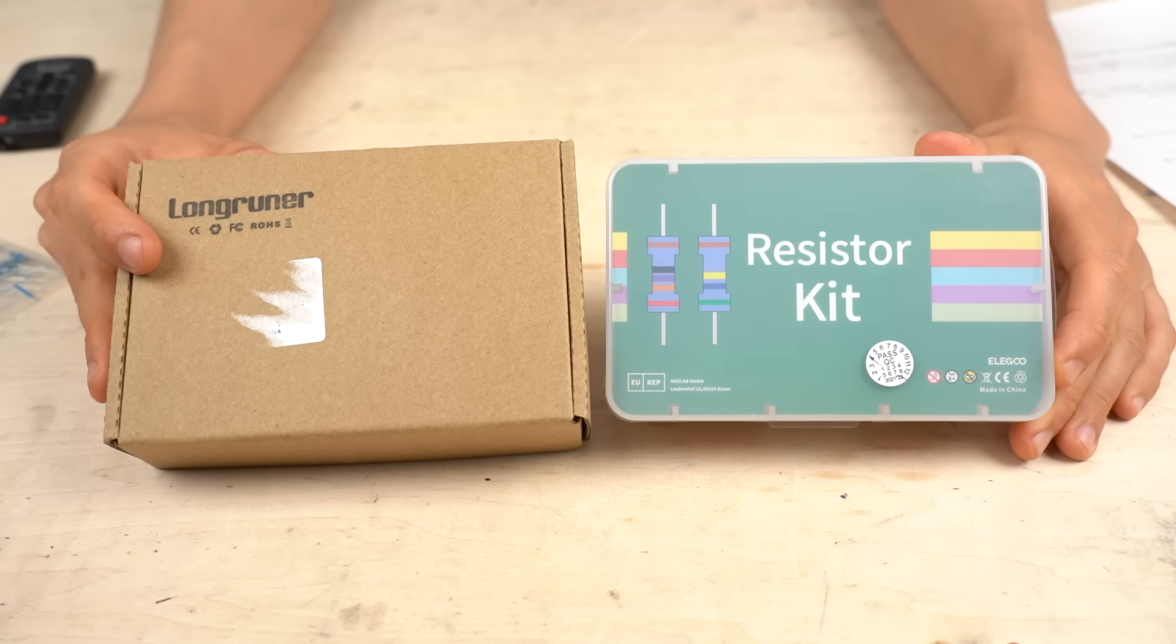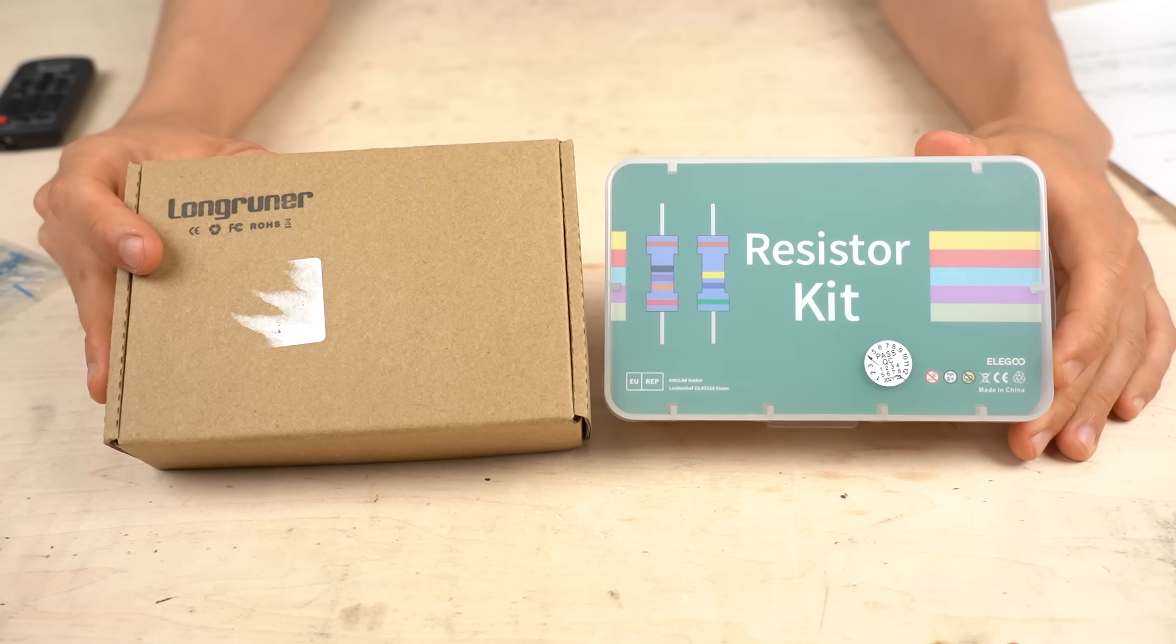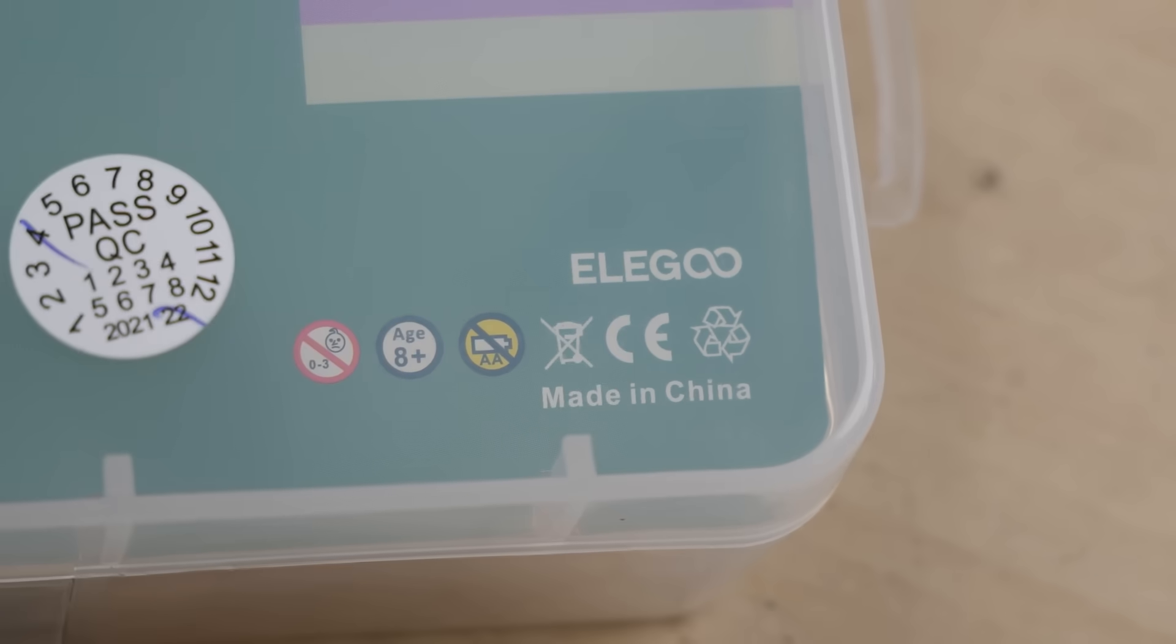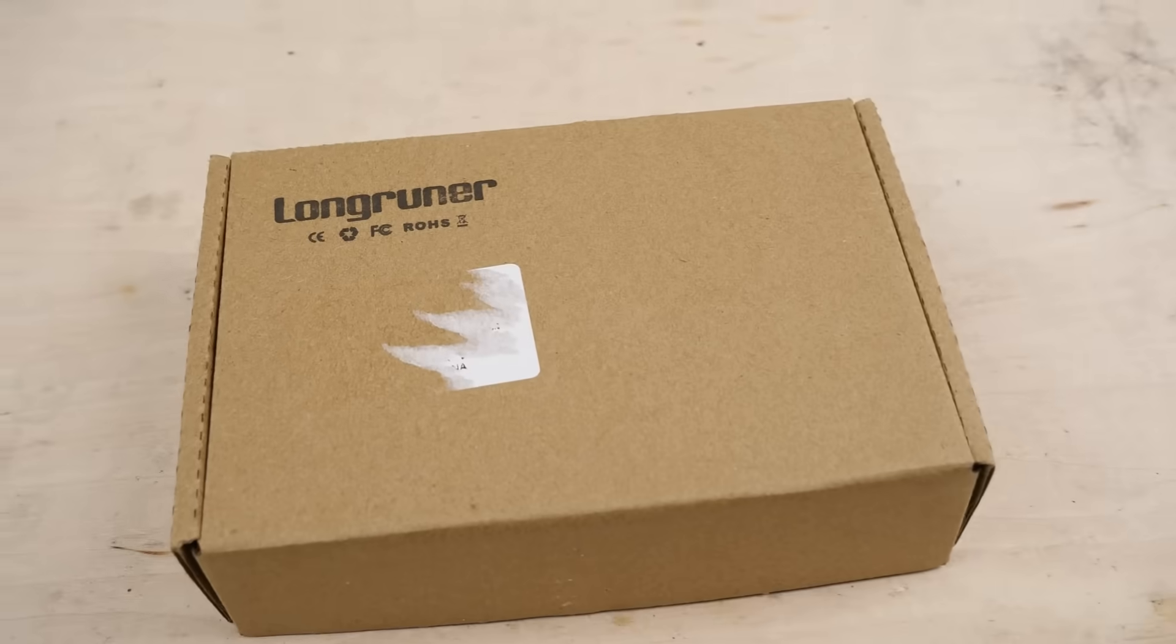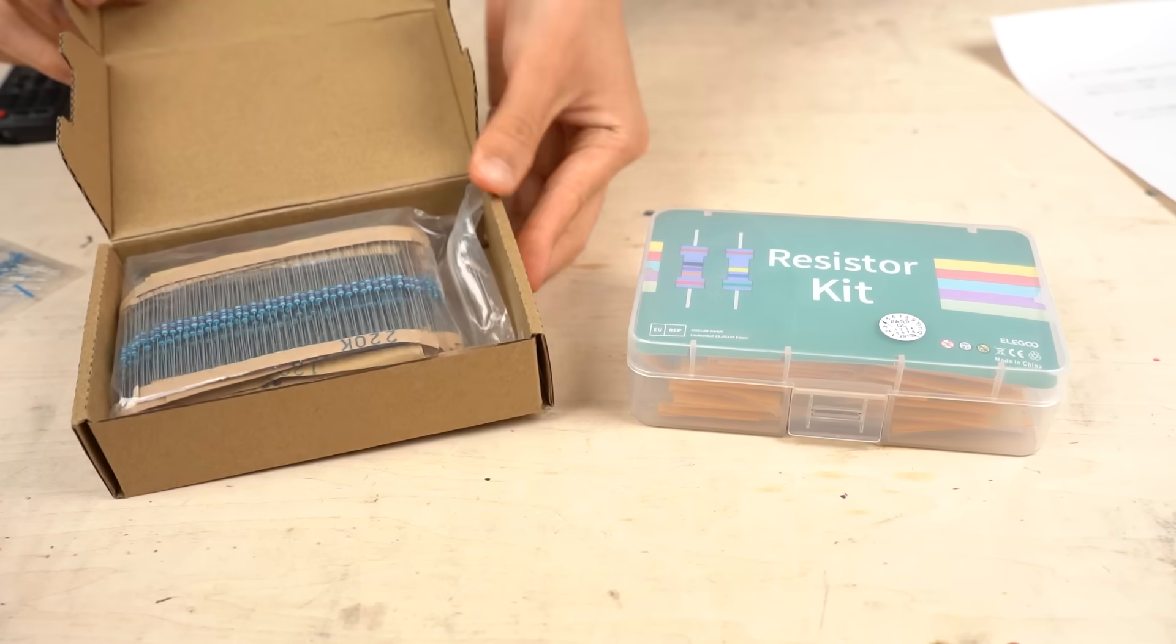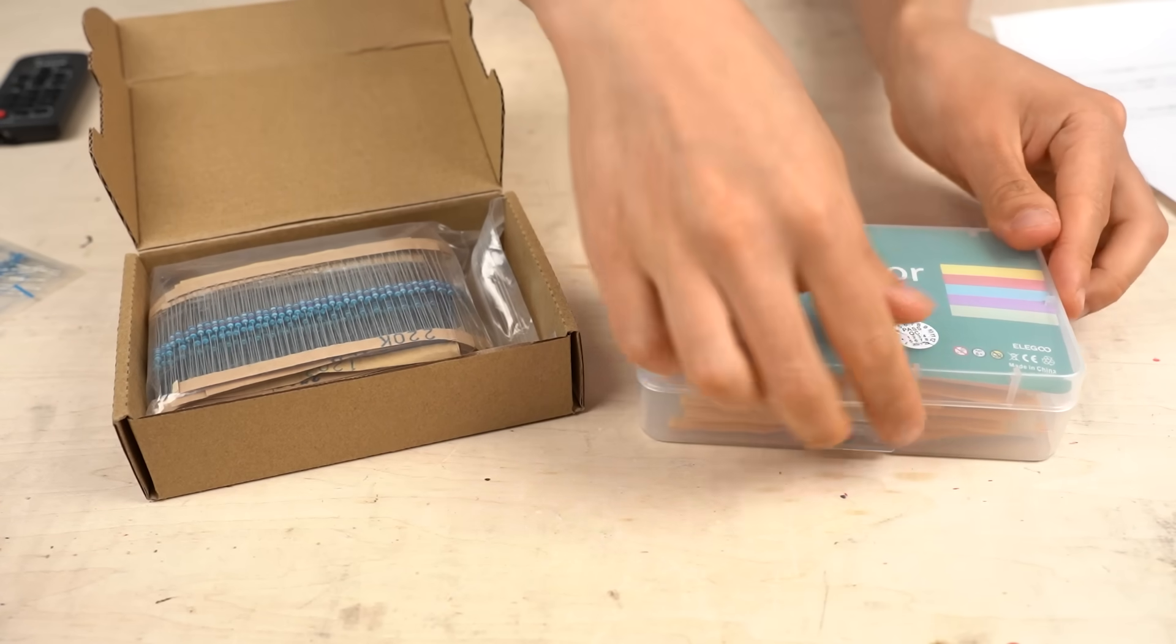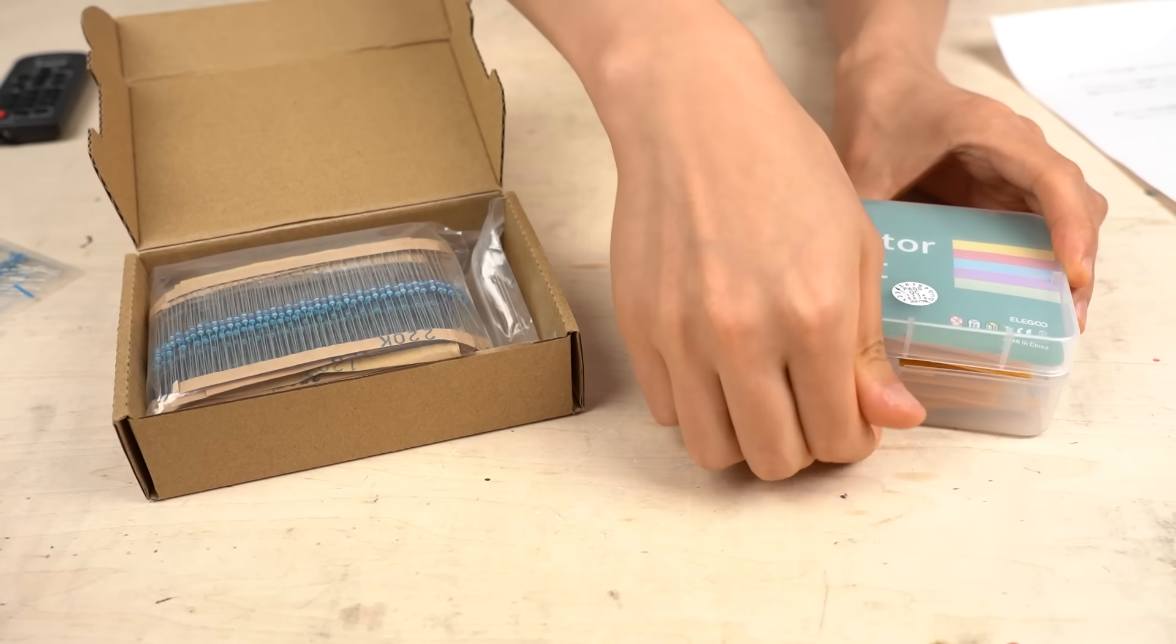I don't think these companies manufacture resistors on their own. Elegoo is a manufacturer of 3D printers, and Longruner, I'm not sure. They sell electronic components and stuff. I guess they both buy a huge number of electronic components, repack, and resell them.